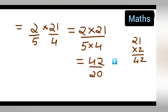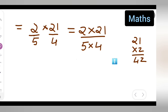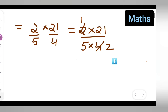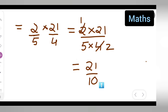Or else, what you all can do is, if you don't want to do it that way, you can directly cancel. 2 ones are 2, 2 twos are 4. Then your answer will be 21 upon 10. See what answer is left — 21. 5 twos are 10.